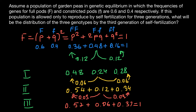Adding the three frequencies in each generation always gives one. However, the frequencies change each generation — we lose heterozygosity with each round. We started with 0.48 heterozygotes, and after the first round of self-fertilization we lost 50% of that heterozygosity.